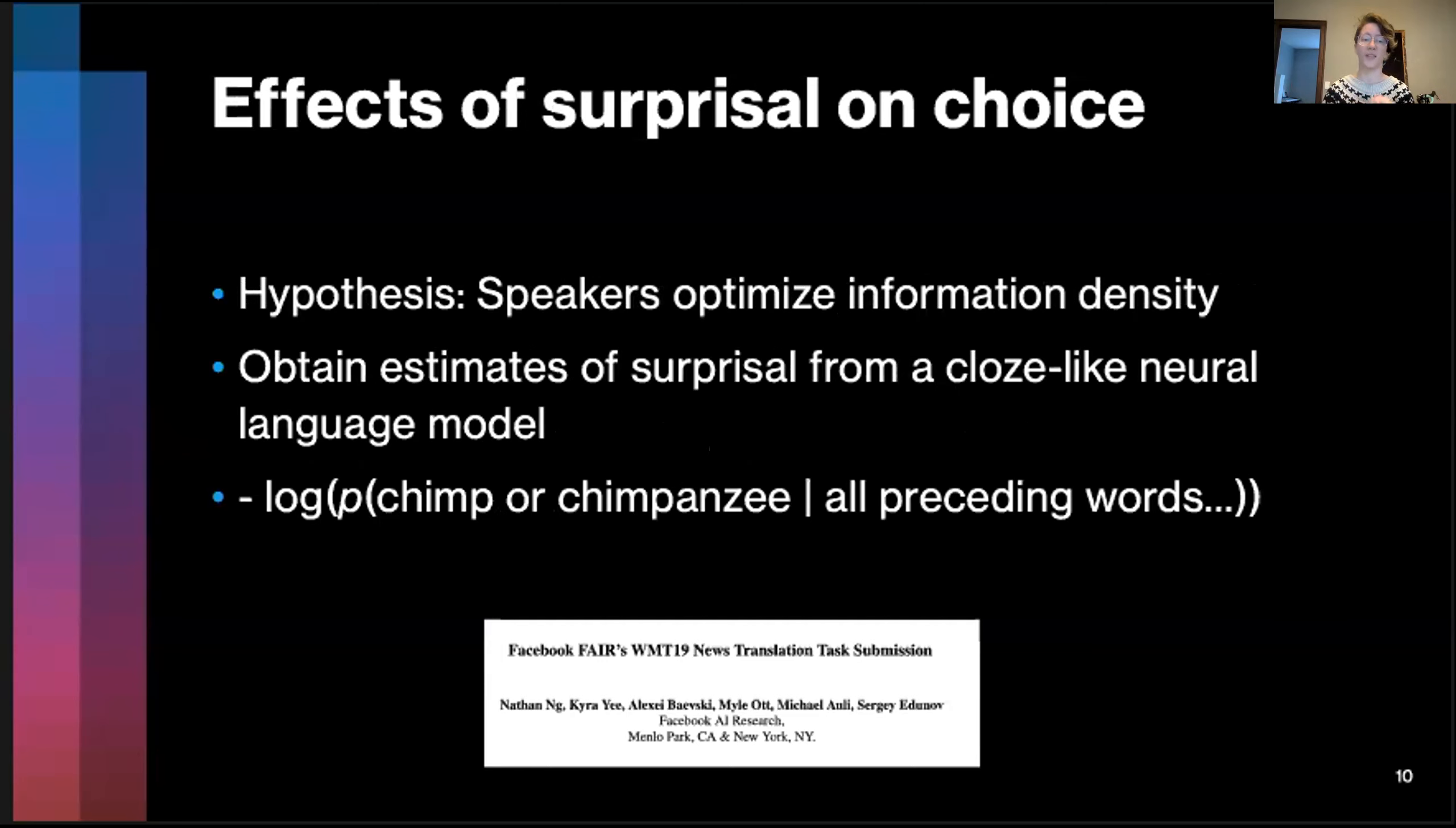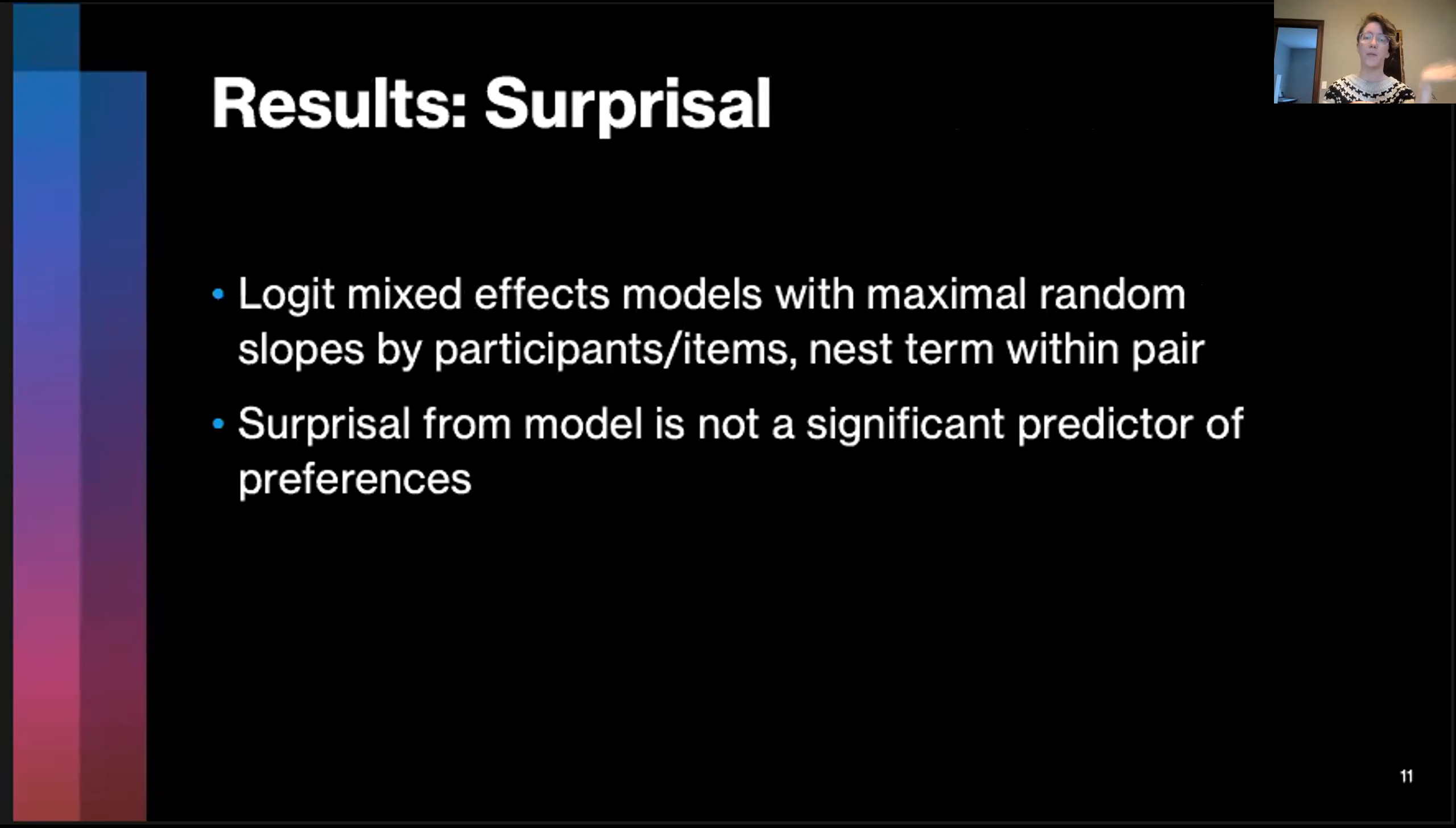Due to the scale, we dichotomized the responses. It turns out participants really just want to use the endpoints, but we can talk about the reasons for that later. We're going to break down our different metrics into different hypotheses. The very first one is that speakers optimize information density. Under this account, we should be able to correlate measures of surprisal with the proportion of responses that participants think should sound better with a long or a short word. In order to do that, we use a state-of-the-art neural network model that is trained in a similar way to canonical connectionist models in which the model's objective is to predict the next word. It's a very cloze-like task that takes into account the entire prior context, not just the trigram probabilities.